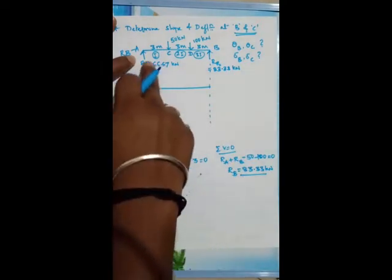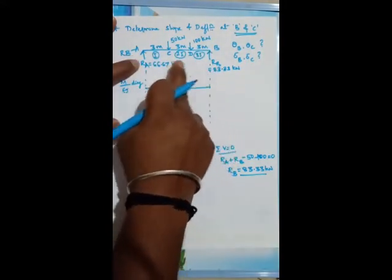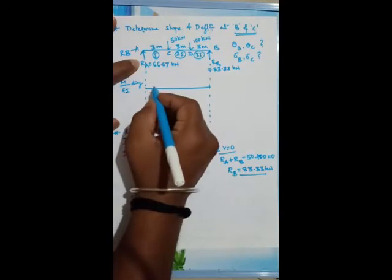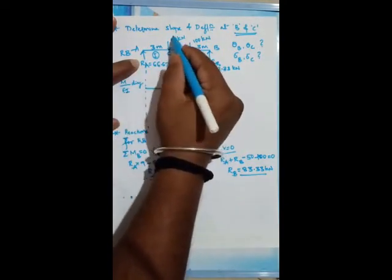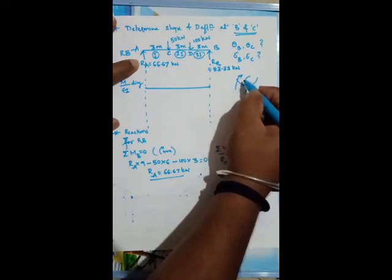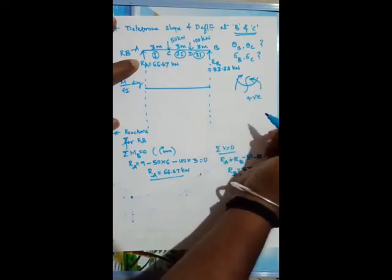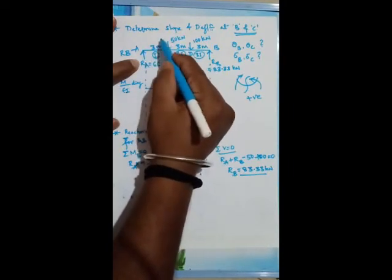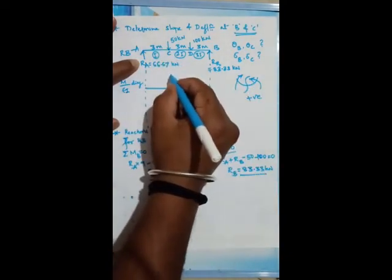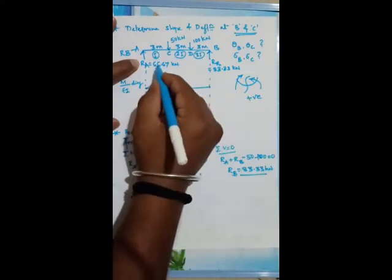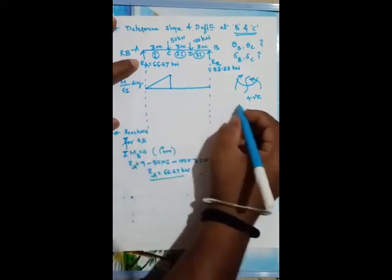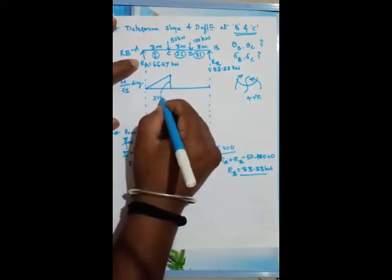These reactions are required to draw the bending moment (M/EI) diagram. Moment at A is 0. Moment at C: cut section, consider left side — Ra × 3 = 66.67 × 3 = 200 kNm. Moment at D: consider right side (only one load) — Rb × 3 = 83.33 × 3 = 250 kNm. Joining these gives a triangular shape from A to C (height 200) and a trapezoidal shape from C to D to B.